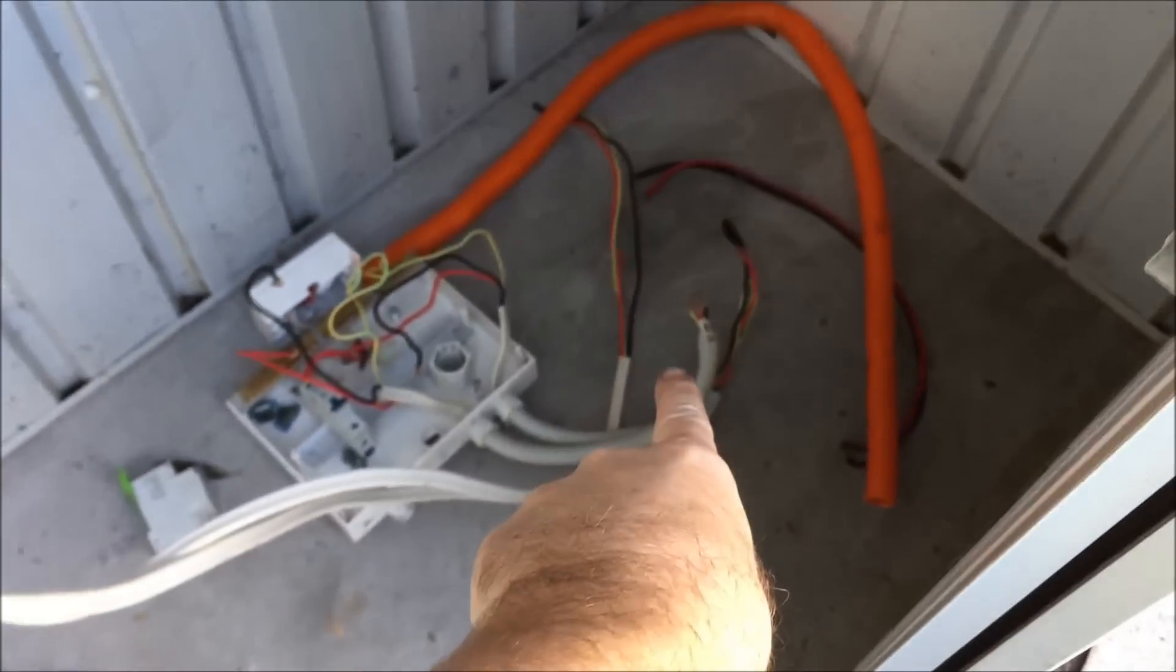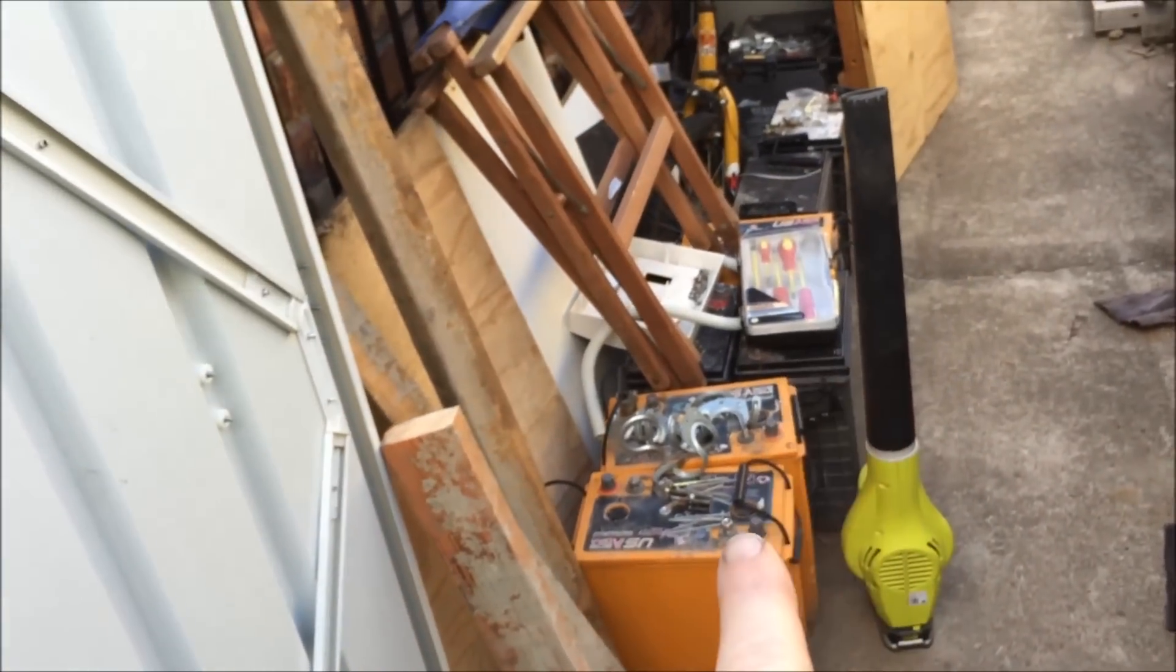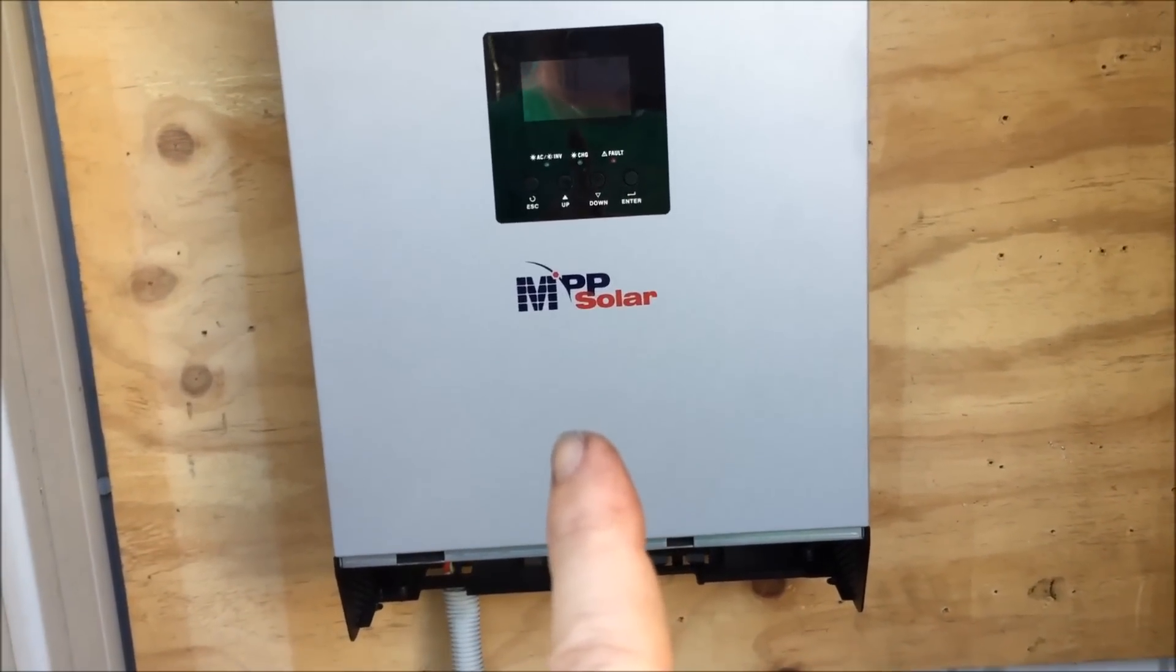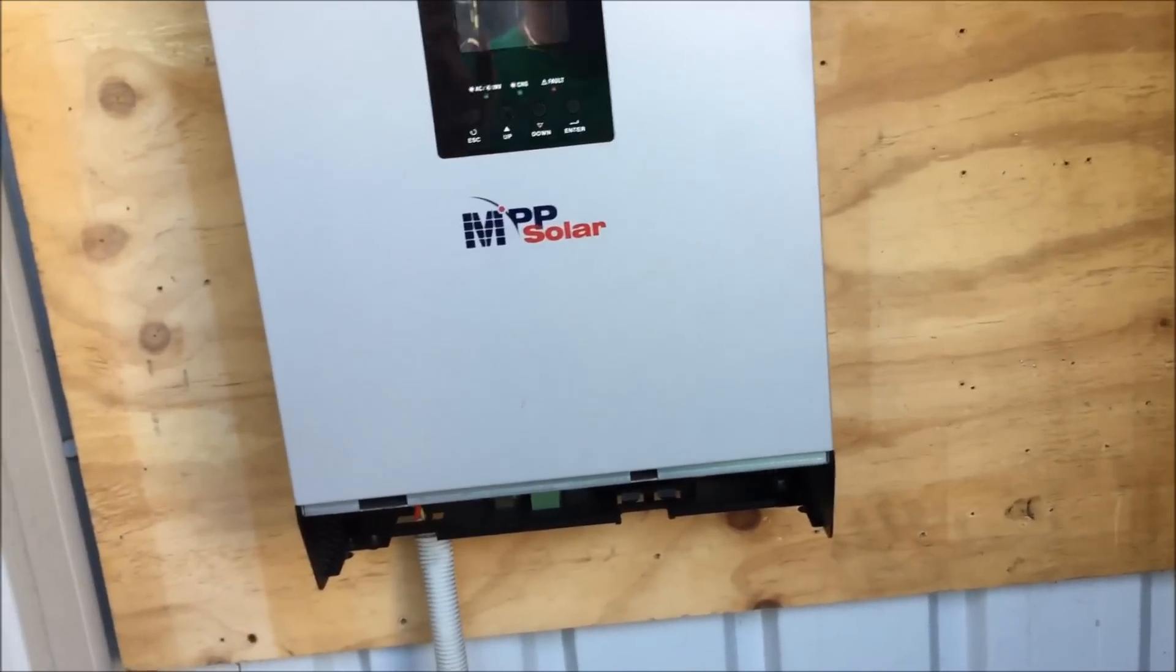Then run all those batteries, all the old batteries, off that, but only have solar hooked into that. Then this one I'm going to use to run the house with the lithium-ion batteries.